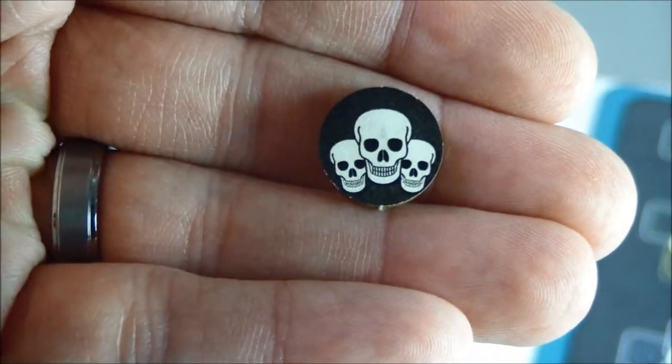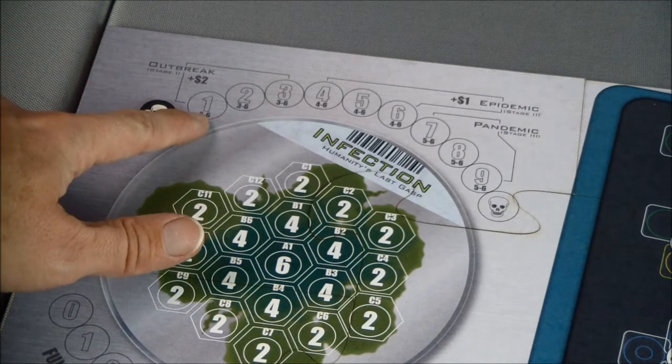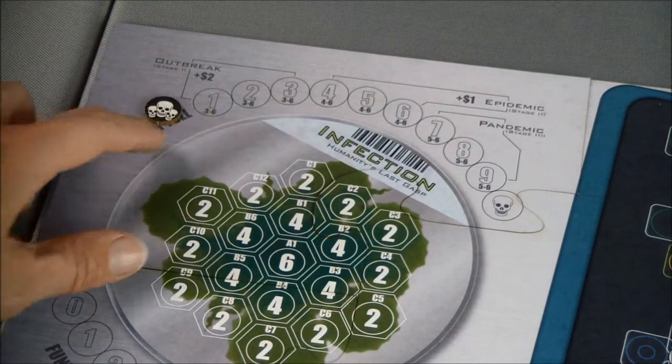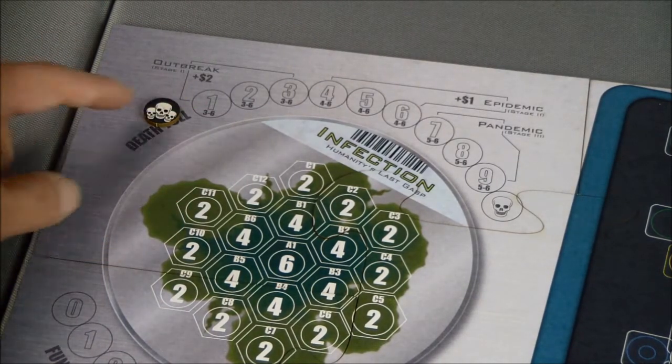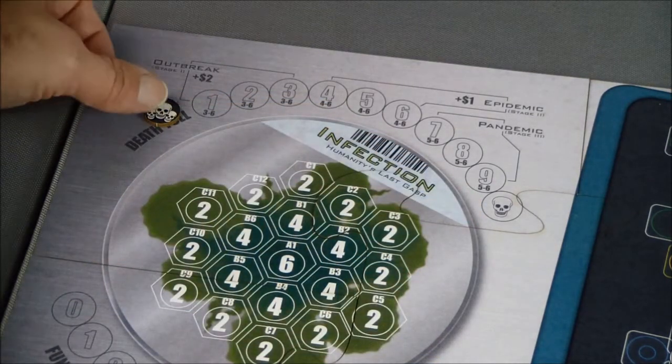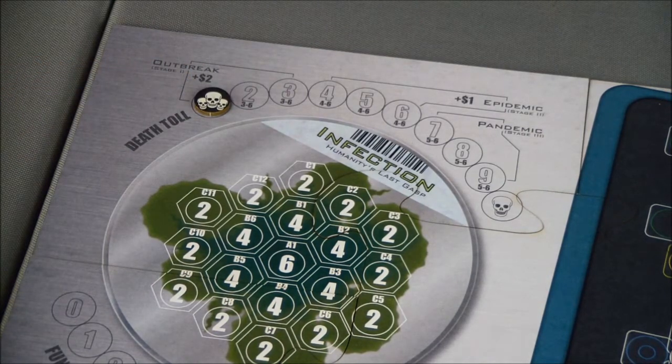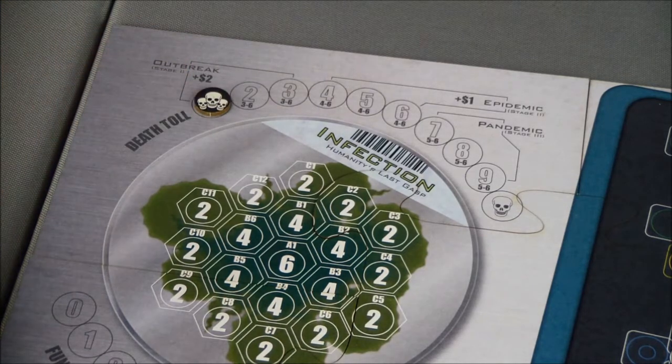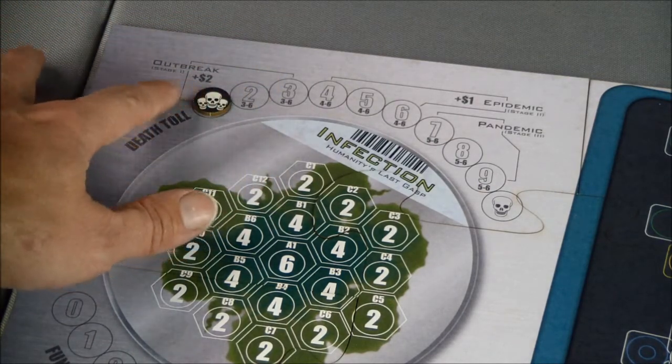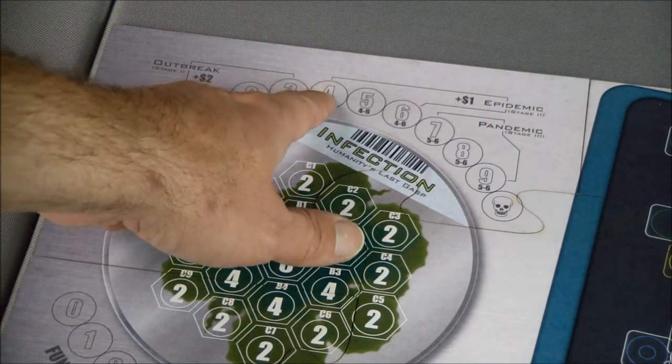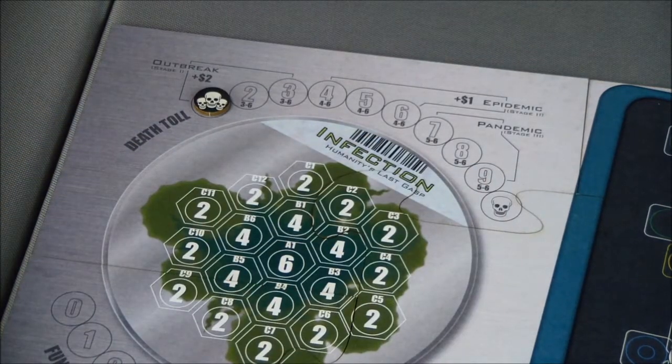The first token we'll place is the death toll marker, and it'll go in the very first spot. You can see that it says three to six underneath it, and that's what we have to roll to successfully contain the bacteria in the containment phase. Depending on what stage we're in, it gets more and more difficult. We start out here at one. Stage two is four through six, then pandemic seven through nine, and then finally if we end up on the skull we've lost.